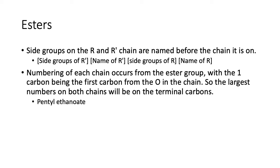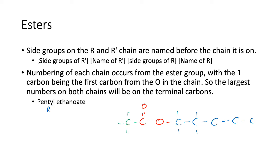Now let's draw pentyl ethanoate — the opposite of ethyl pentanoate. Now the R' group is pentyl: one, two, three, four, five carbons. And then the R group is ethanoate: the ester carbon gives us one, so we just need one more. Then add the hydrogens.